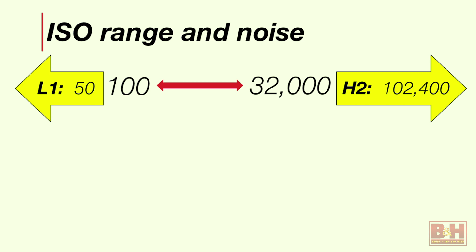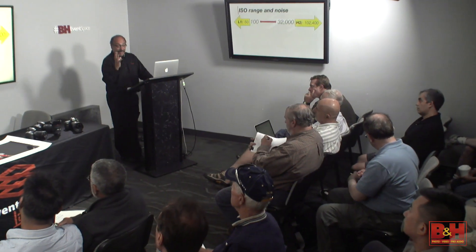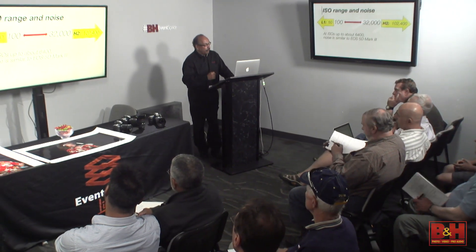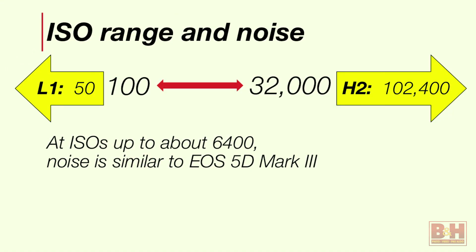In terms of how much noise you get as ISOs go up — many of you are familiar with the 5D Mark III. Up to about 6400, the noise levels between the two are actually pretty similar. Now keep in mind, that's a win for the 5D Mark IV because it has 50% more pixels. The pixels have to be smaller, and smaller pixels typically mean more noise as ISOs go up. The fact that we're able to keep it level is a win.